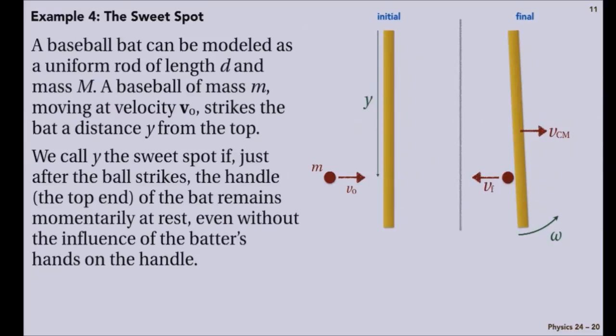So we'd like to understand how to calculate where we would hit the rod, which we'll think of as a baseball bat, only a very poorly manufactured one, so it's uniform. And we will hit it at some distance y below the top. And what we would like is to figure out how far down do we need to hit it so that the top doesn't want to move left or right. That spot is called the sweet spot.